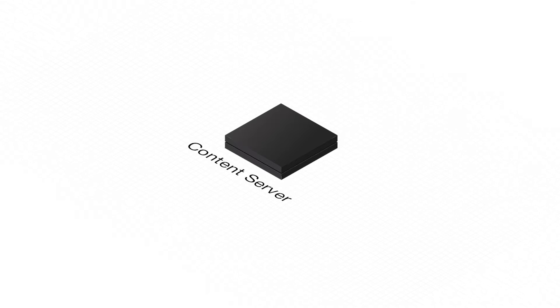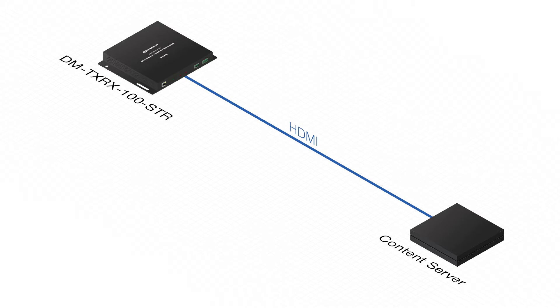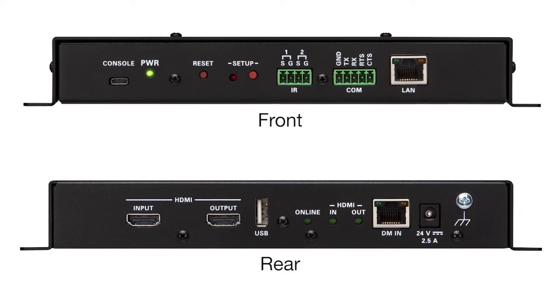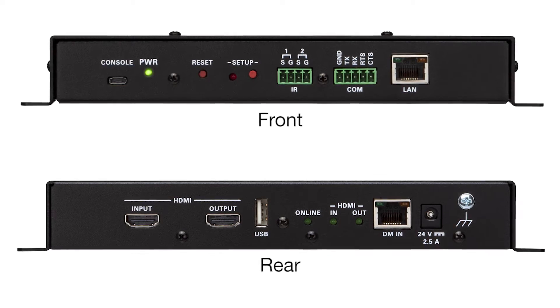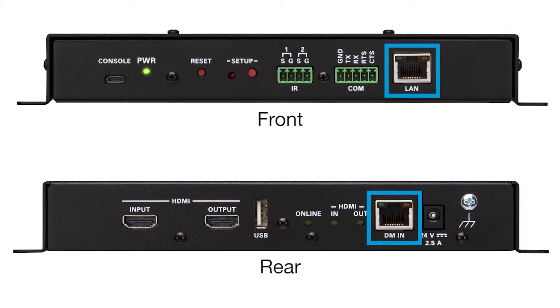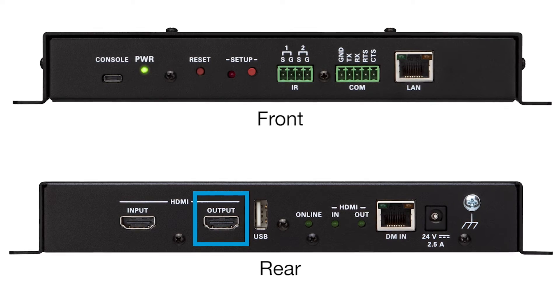If you have a centralized content server, you can use the DMTX-RX100STR to encode the video and transmit H.264 using the existing corporate network. You don't need any special hardware or infrastructure — you certainly don't need an AV matrix switcher. The DMDGE-200C can receive the network AV through the DM input or the LAN port, decode it, and transmit HDMI to the display.